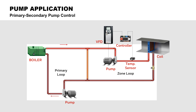When the secondary loop water temperature starts to drop, the pump ramps up, pulling warmer water from the primary loop. When the secondary water temperature is at or above set point, the pump slows down. The loop cools off as less water from the primary loop is introduced into the secondary loop.